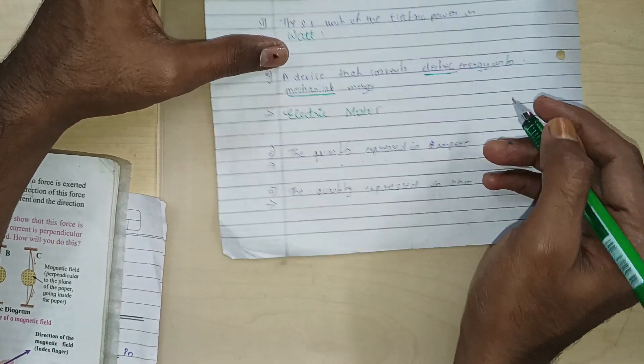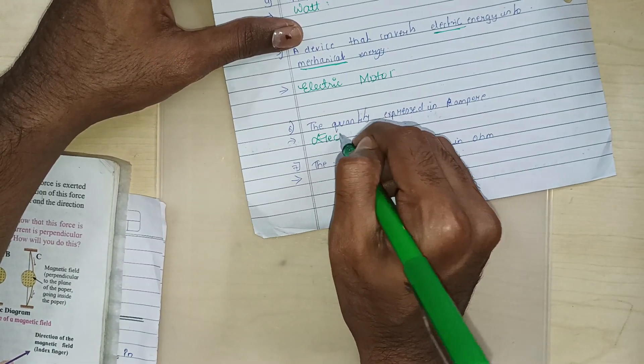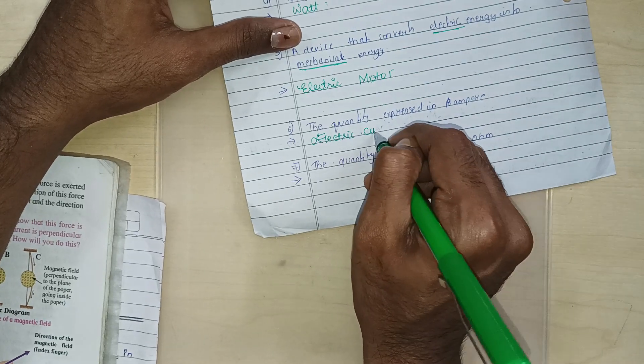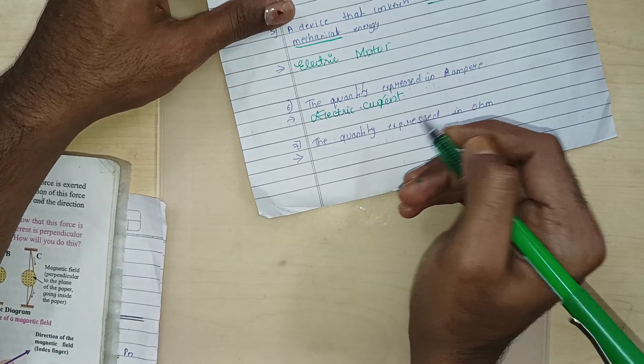The quantity expressed in ampere is electric current. Electric current, yes or no?